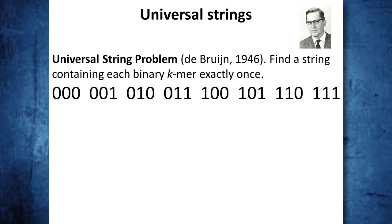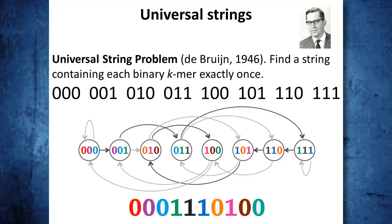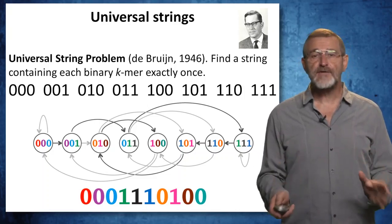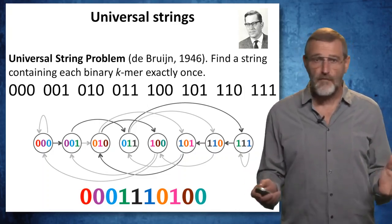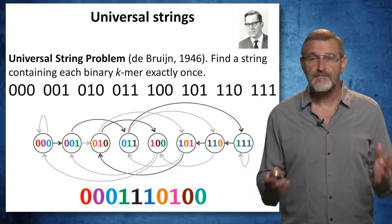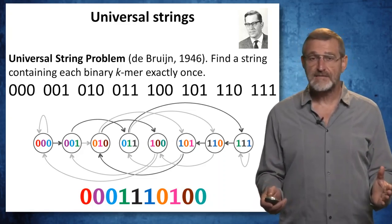For example, these are all eight binary 3-mers, and we can construct an overlap graph for these eight 3-mers and find a Hamiltonian path in this graph. In this case, it will be 0,0,0,1,1,1,0,1,0,0. But de Bruijn wanted to solve this problem for any k. For k equal to 20, the overlap graph will contain millions of vertices, and it will be very difficult to determine whether there is a Hamiltonian path in this graph.